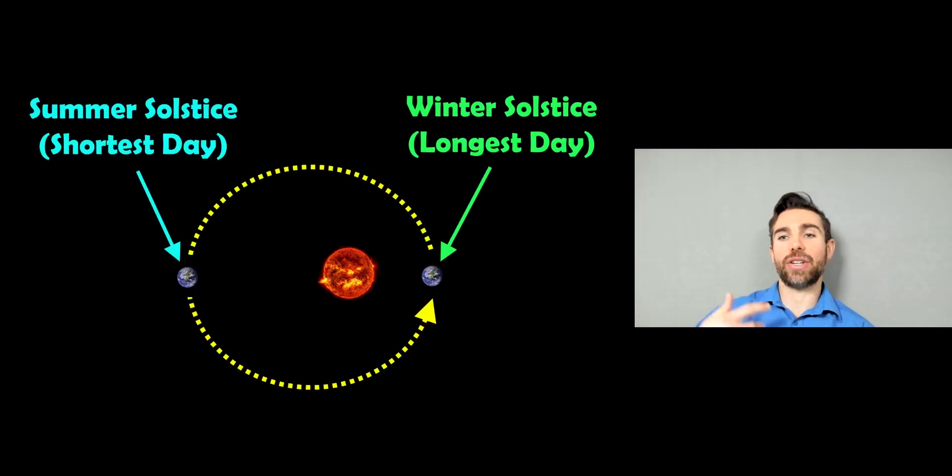Now, when we think about the longest and shortest days that we have on Earth, we would probably associate our longest day with the summer solstice and the shortest day with the winter solstice. But it's actually the other way around. And the reason for that is when we think about the longest and shortest day, we're thinking about daylight hours. So in that case, yes, you would have longer daylight hours in the summer and shorter in the winter.